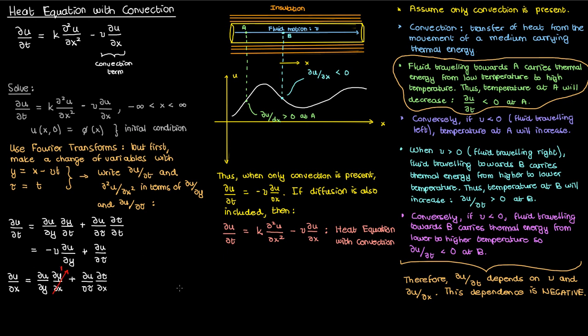Now the partial of y with respect to x is just 1 and the partial of tau with respect to x is 0 because tau only depends on t. It doesn't have any x term within its definition at all. So my partial of u with respect to x equals the partial of u with respect to y.